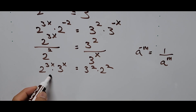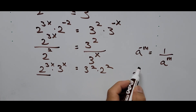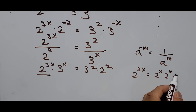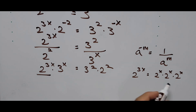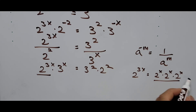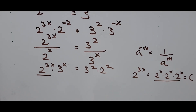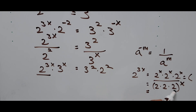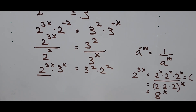Now, 2 raised to 3x can be written as 2 raised to x times 2 raised to x times 2 raised to x — multiplying numbers of the same base adds the exponents, giving 2 times 2 times 2 raised to x power, which is 8 raised to x. So we substitute: 2 raised to 3x becomes 8 raised to x.